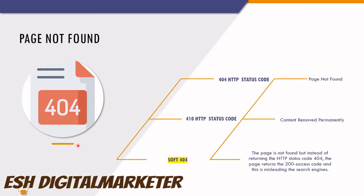Before explaining the concept, I want to tell you about HTTP status codes. Whenever a search engine crawls your website, it gets a status code from the server. When the server sends a 404 status code, it means the page you are looking for is not found. When the server sends a 410 status code, it tells the search engines the page has been permanently removed, so search engines won't crawl that page again.